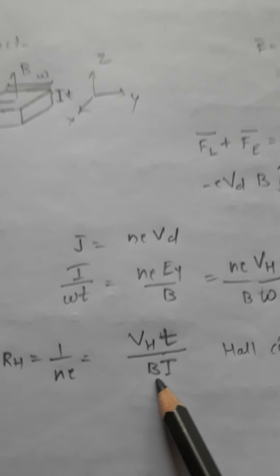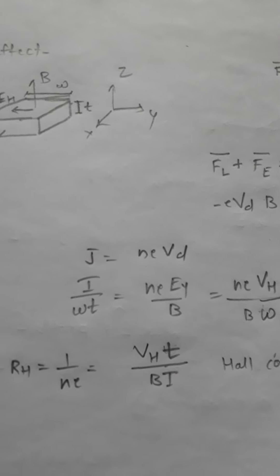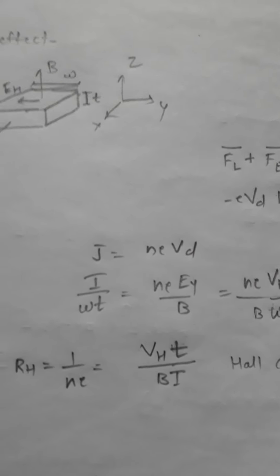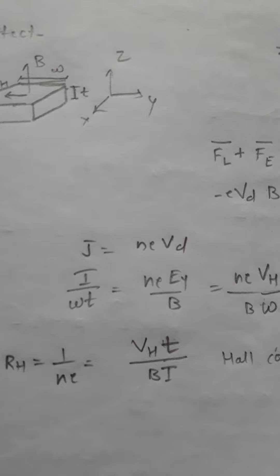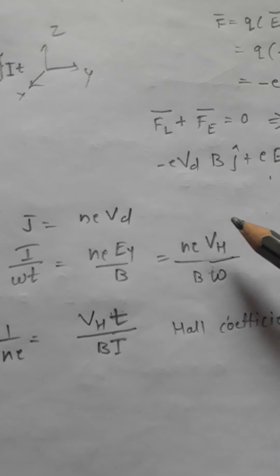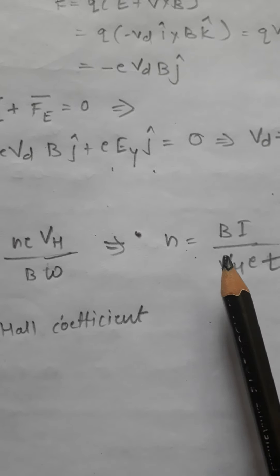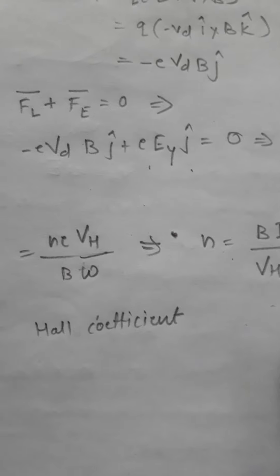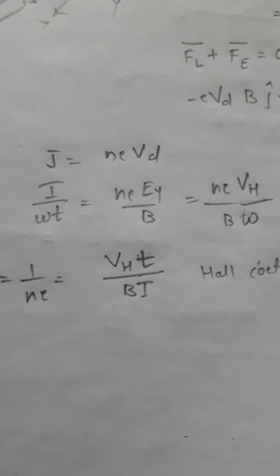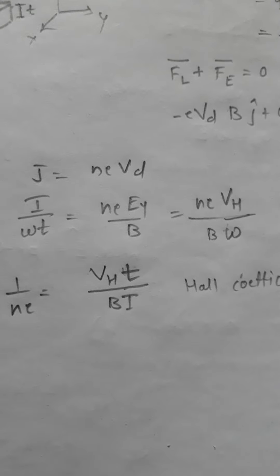We can use the Hall effect to find what kind of conductor we have, whether it's n-type or p-type, which is given by the sign of the Hall voltage. We can also find carrier concentration n, and the measurement of Hall coefficient RH and resistivity gives us the conductivity of the material.